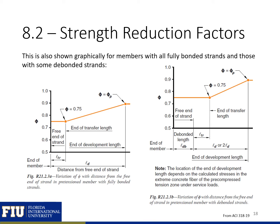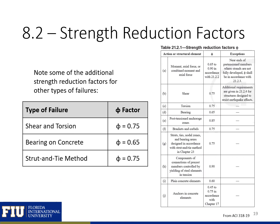The information from the previous table is also provided graphically in ACI 318. We have additional strength reduction factors based on other types of failures, including the phi factor for shear and torsion, bearing on concrete, and the strut-and-tie method.